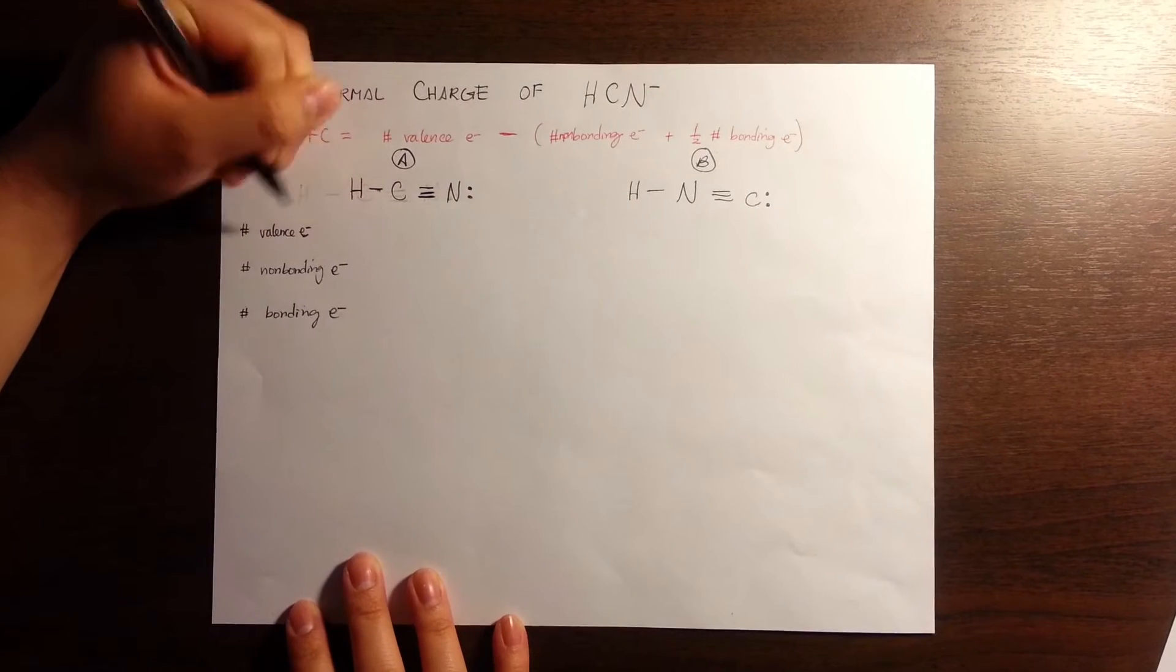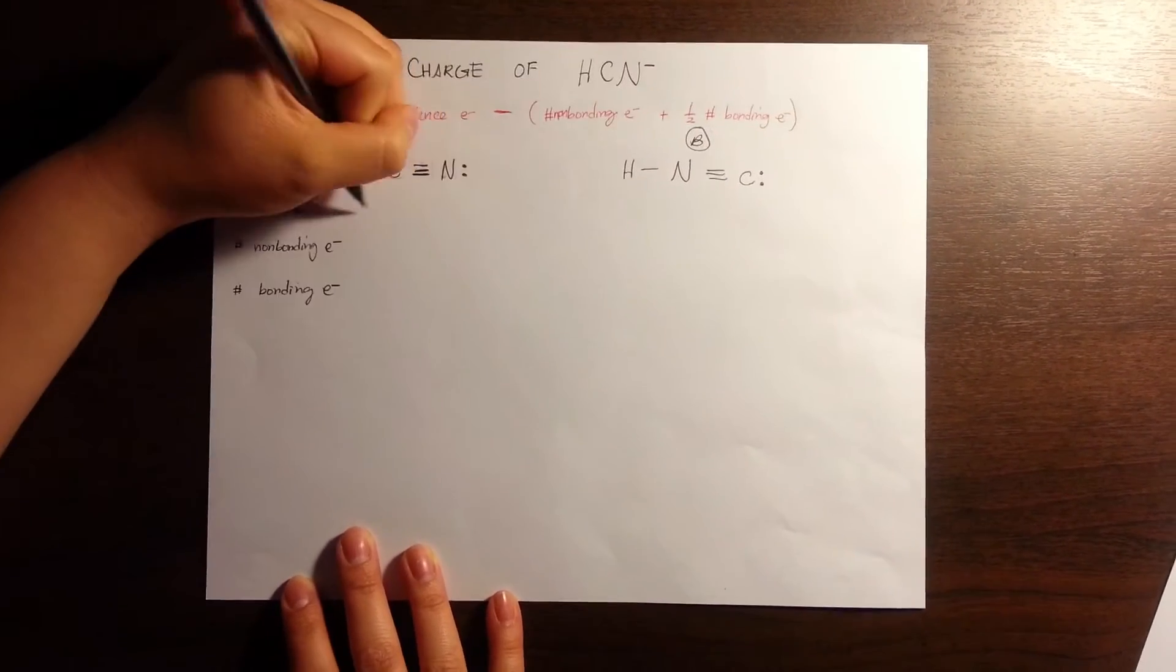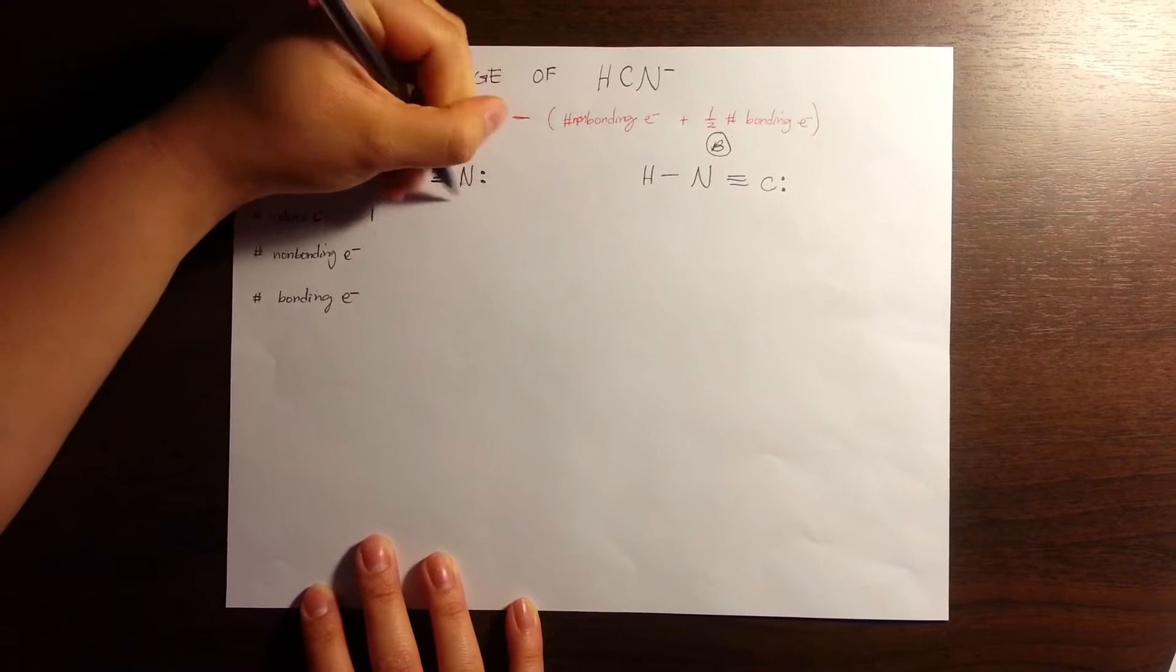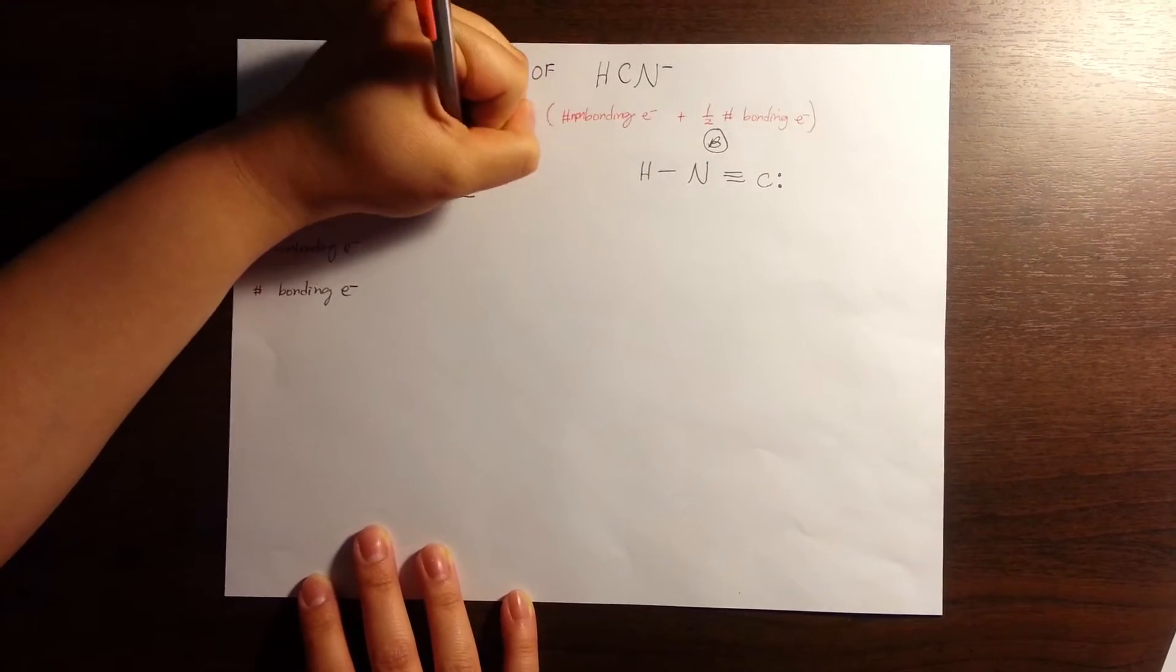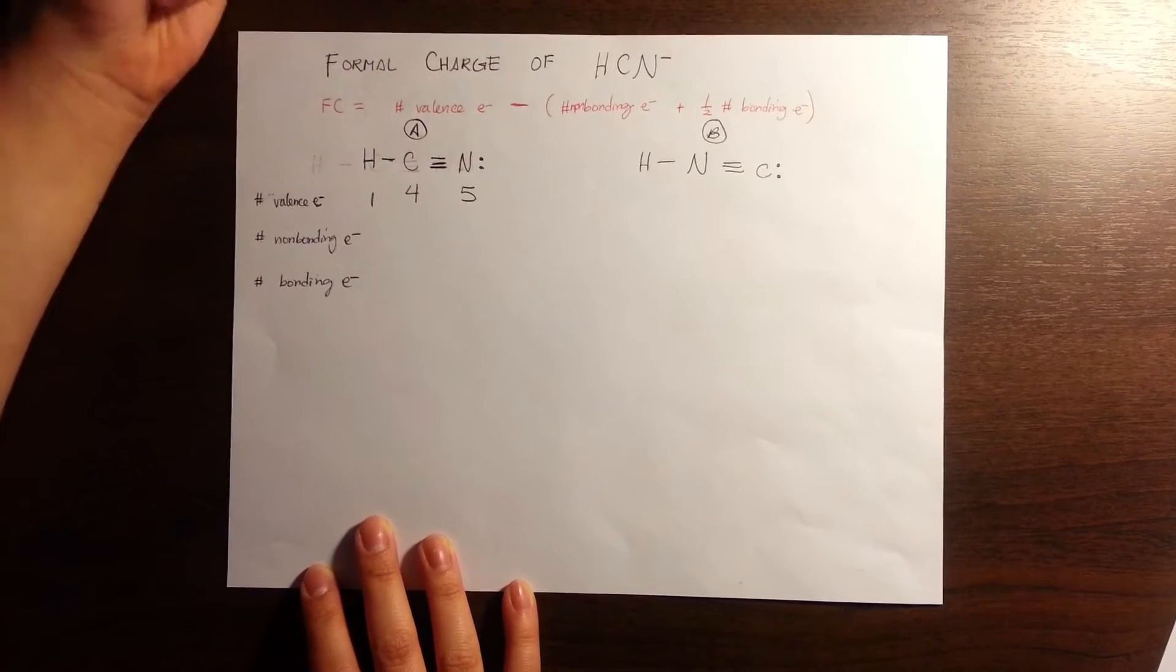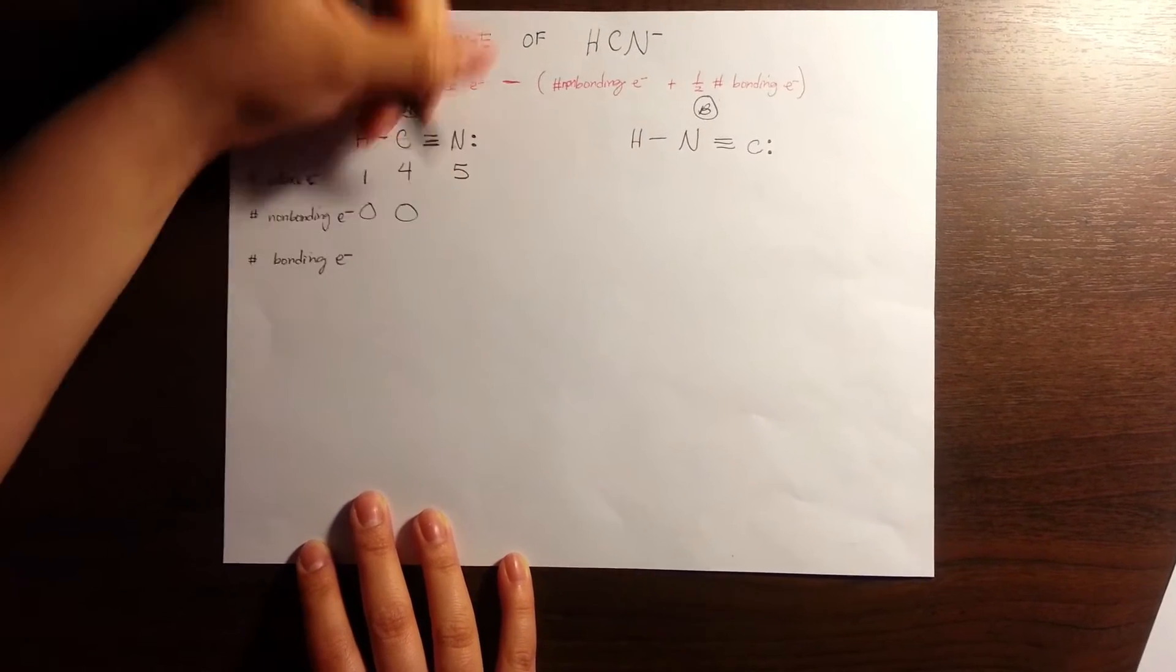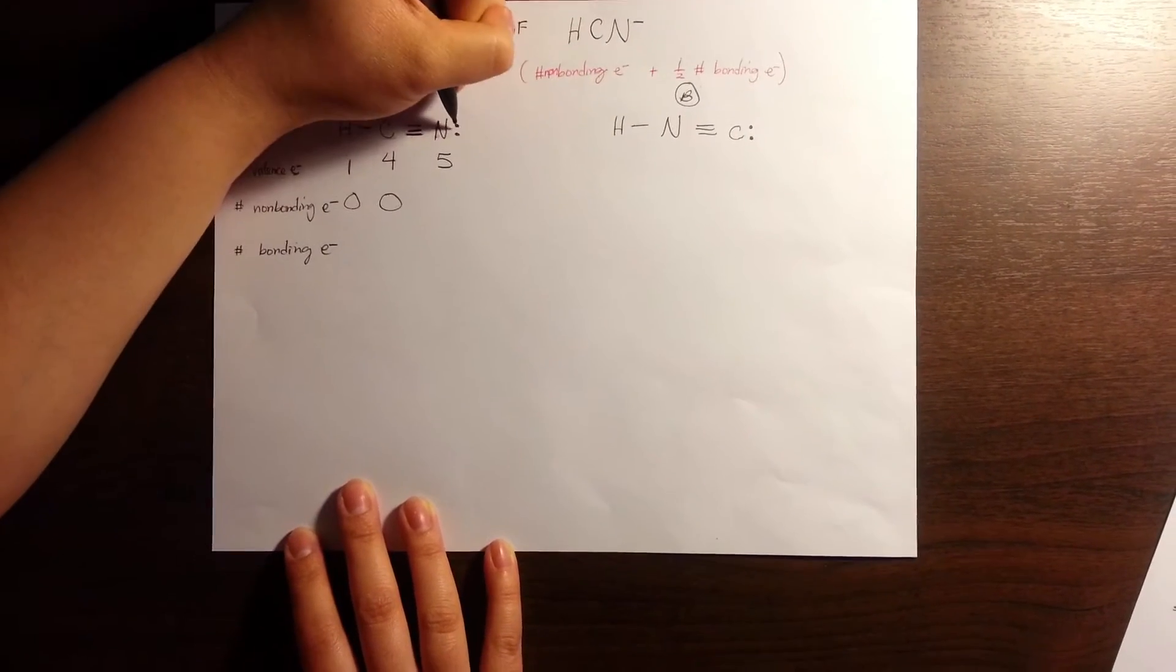So let's start. For the number of valence electrons: hydrogen has one, carbon has four, nitrogen has five. The number of non-bonding electrons on hydrogen is zero. For carbon, we have zero as well. For nitrogen, we have two.